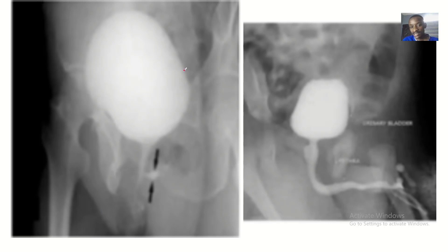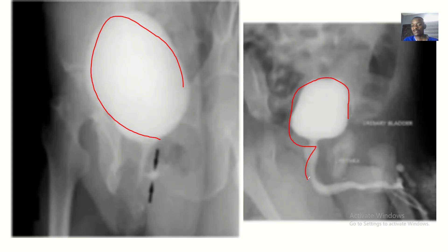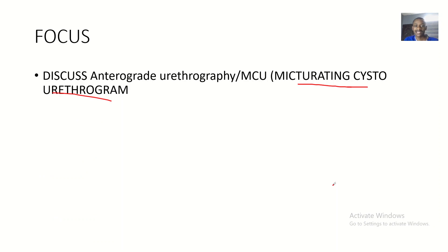So that's it — this is a micturating cystourethrogram. It is used to study the bladder to see if there's any abnormality. And for the bladder to appear white, you must use a contrasting substance to invert the color, so instead of the bladder being black as a soft tissue, it will be white. That's it about anterogrid uretrography or micturating cystourethrogram. See you guys in the next one.